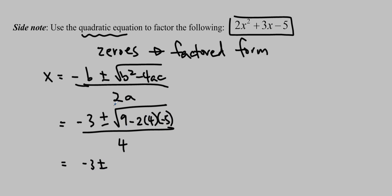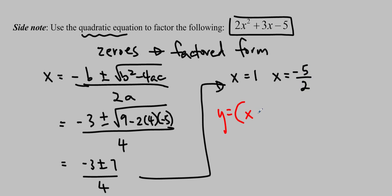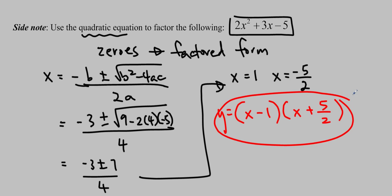So we get x equals negative 3 plus 7 equals 4, divided by 4, which is 1. And x equals negative 3 minus 7 over 4, so negative 10 over 4 is negative 5 over 2. A lot of people, when writing in factored form, would write it as x minus 1, and then x plus 5 over 2. If you did it this way, you should remind yourself: this is wrong. Because if you multiply this out using FOIL, you would get y equals x squared, but the original has 2x squared — so you'd get the wrong answer.